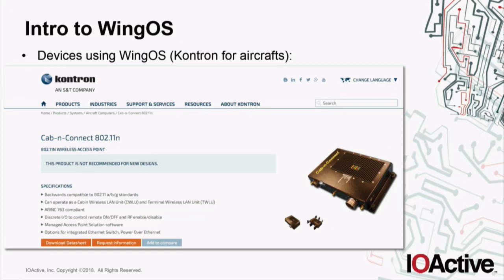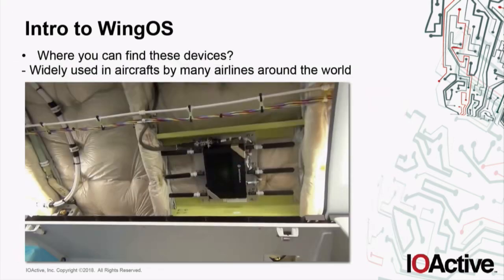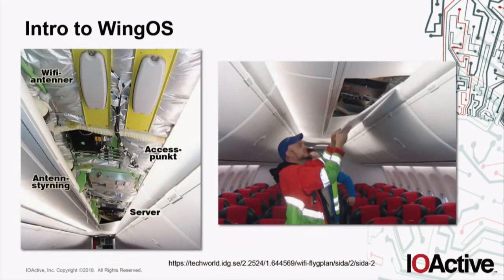Basically the Contron box has special connectors to comply with aircraft regulations, but inside we have the Motorola AP7131 access point. As we can see in pictures from the internet, they're actually installing that Motorola access point at the ceiling of the aircraft. It's widely used in aircraft by many airlines around the world, and we can see the Contron box with that particular Motorola access point inside.